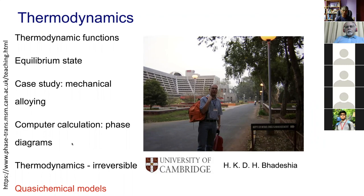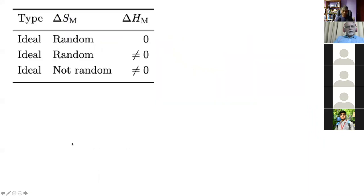To summarize the characteristics of the models discussed so far: the ideal solution has a random mixture of atoms and zero enthalpy of mixing, so the entire contribution to the free energy comes from the minus T times delta S_m term, and the system is said to be completely random at all temperatures.